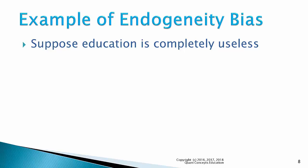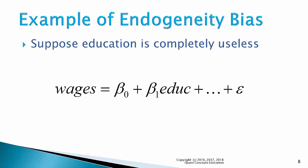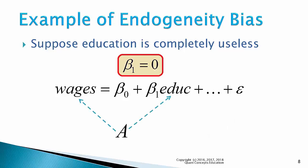You can go to school all you want, and that's not going to have an impact on your wage. So, back to our model — if education truly has no impact on wages, then the population value of the coefficient of education, beta1, should be zero. Now, suppose again there is an omitted variable in this model, in the error term, that is correlated to education. Let's say this is competitiveness. It does have an impact on wages, but was excluded from the model because it's a difficult quality to measure and quantify.